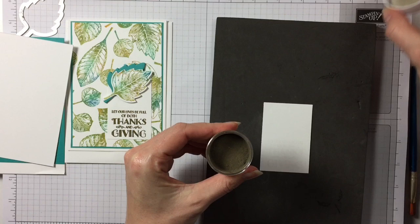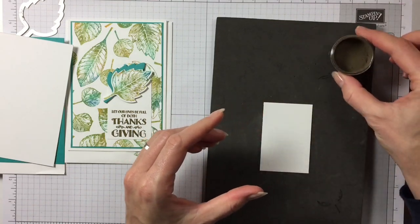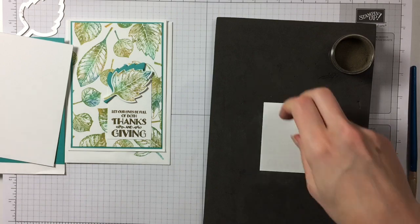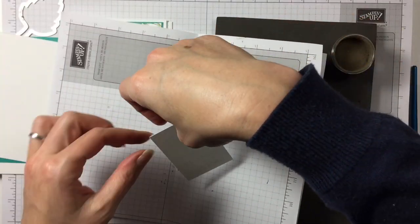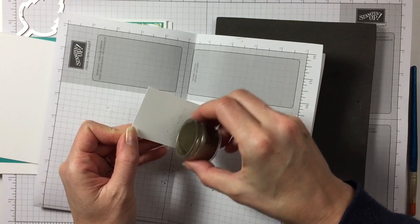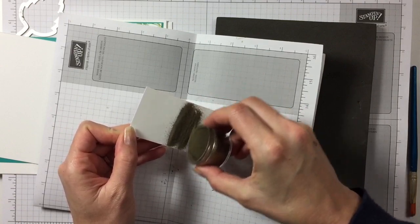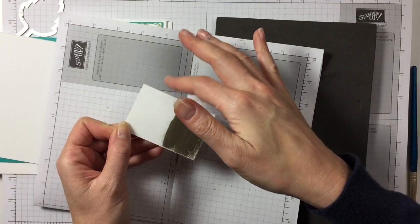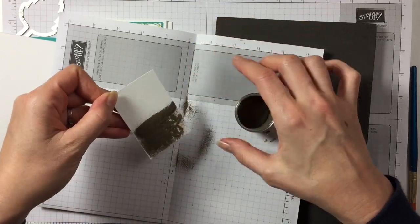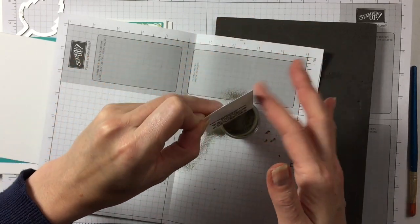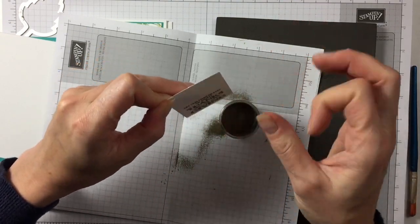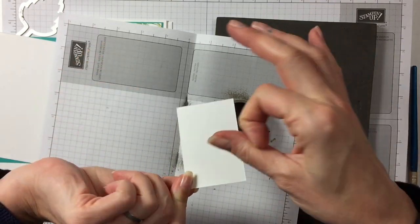So we get our powder out and I have here a piece of paper just so that I can catch my powder. There we go. I do that a bit so it catches the Versamark and then I try to get as much as I can back in the pot.